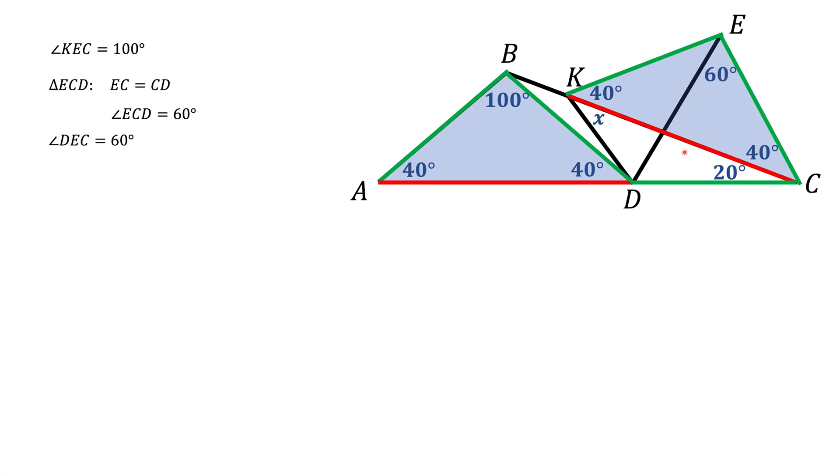But that means the other two angles also have to be 60 degrees. Now we got a triangle where all three angles are 60 degrees. Such a triangle is called equilateral, and that means ED is also green—the same length as EC and CD.